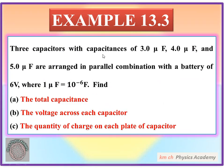Three capacitors with capacitances of 3.0 microfarad, 4.0 microfarad, and 5.0 microfarad are arranged in parallel combination. There are three capacitors: one is 3.0 microfarad, the second is 4.0 microfarad, and the third is 5.0 microfarad. We have to connect these in parallel combination with a battery of 6 volts.